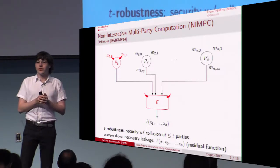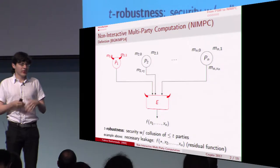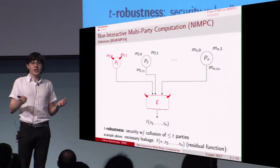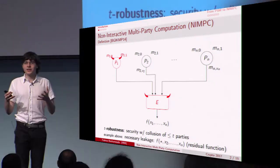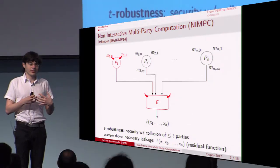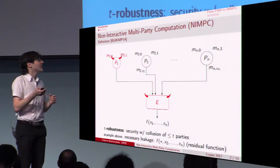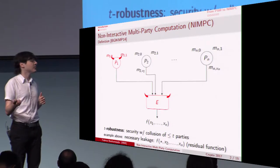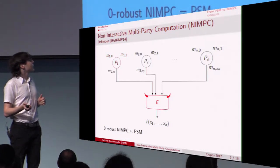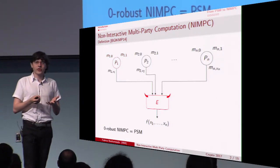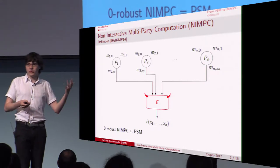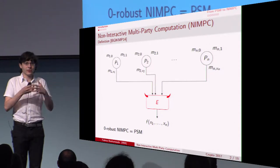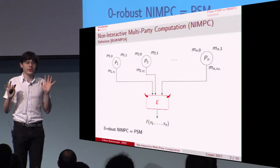More formally, the security property we want is called t-robustness: the protocol is secure even if at most t parties are colluding with the evaluator, and those t parties and the evaluator should not learn more than the residual function. Zero robustness corresponds to the original PSM notion, since in zero robustness you suppose there is no collusion at all — the evaluator is just honest but curious.